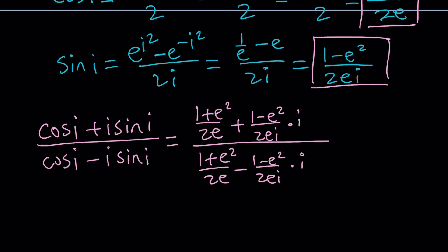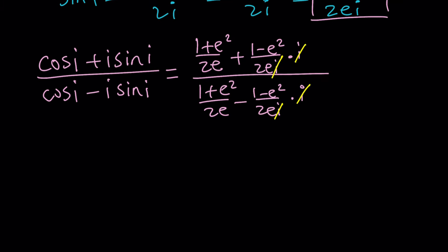Let's go ahead and simplify this a little bit. It kind of looks complicated, right? Or does it look complex? So i is going to cancel out. i is going to cancel out. Great. Now we get a common denominator, so we can just add the numerators and forget about the denominators because they are the same.